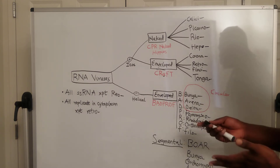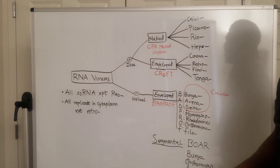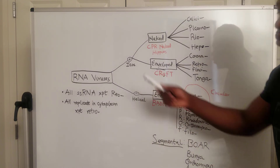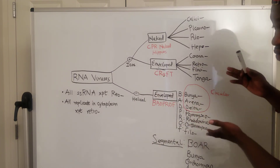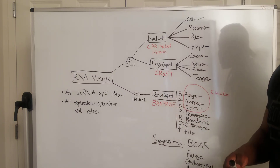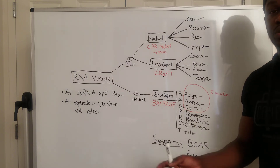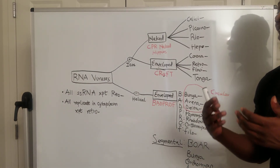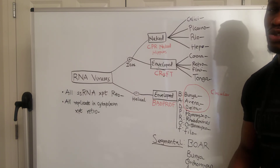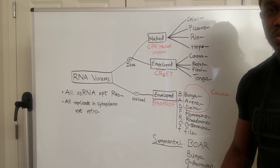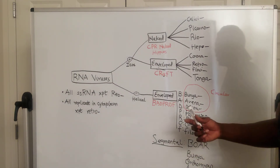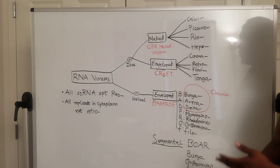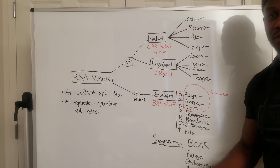Once you know this chart and go through the different viruses, it all makes sense. For example, when you see togavirus, you immediately know it's an RNA virus, enveloped, positive, and icosahedral — think how many questions you can answer from this chart alone. Make sure you memorize this chart and it will make your life so much easier. If you like this video, subscribe — this is the first of many. Thank you and bye!